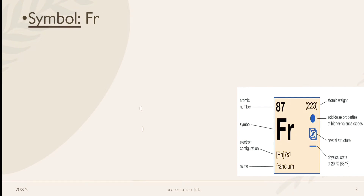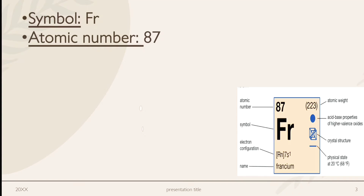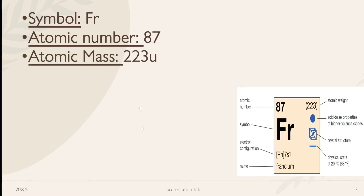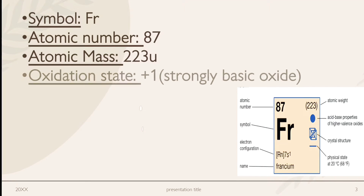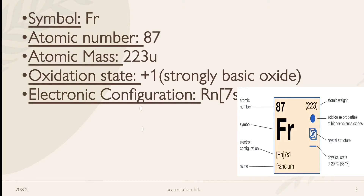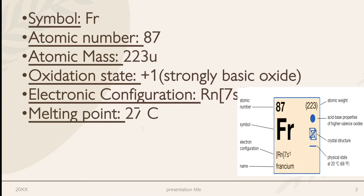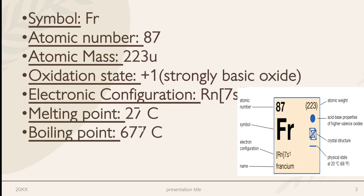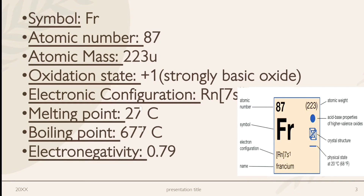Francium has atomic number 87 and atomic mass 223. Its oxidation state is +1, forming a strongly basic oxide. Its electronic configuration is [Rn] 7S1. Melting point is 27 degrees centigrade. Boiling point is 677 degrees centigrade. Electronegativity on the Pauling scale is 0.79.